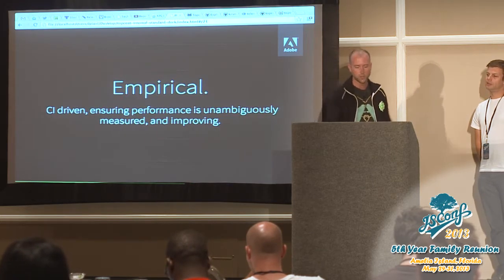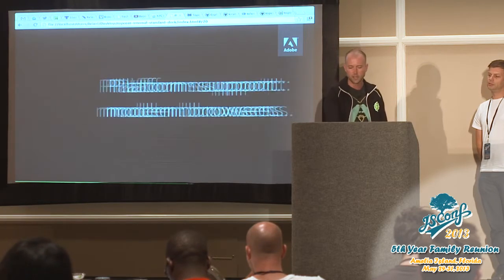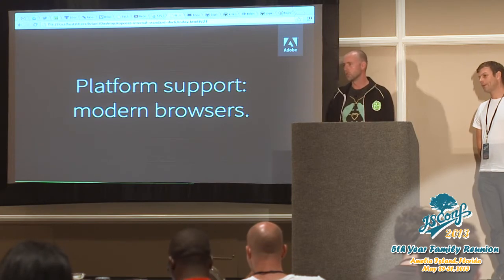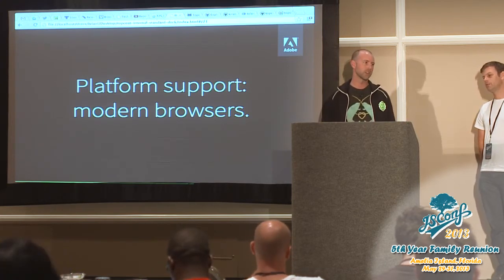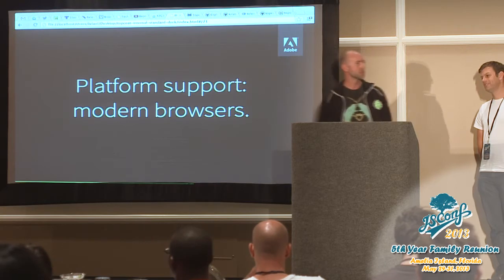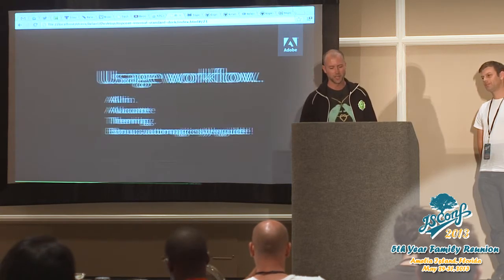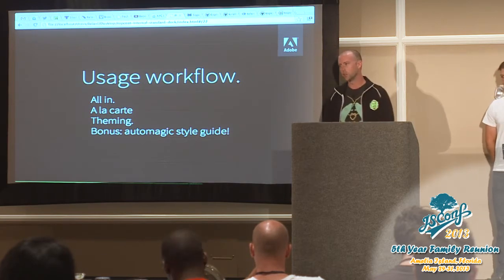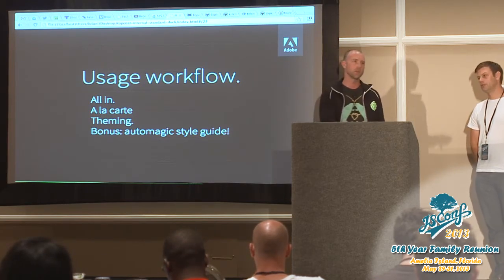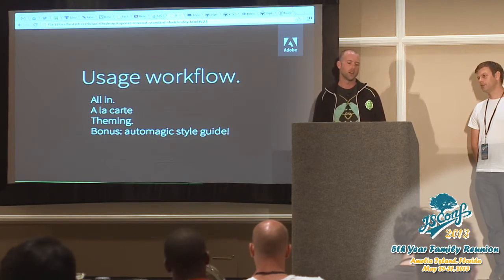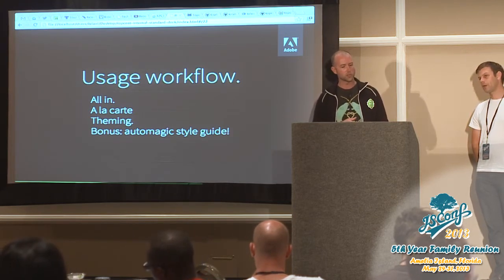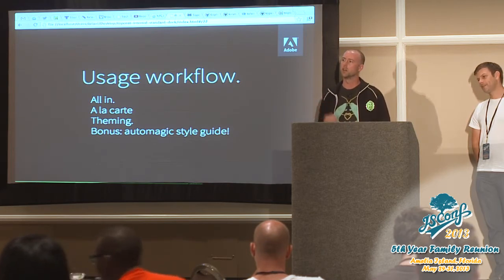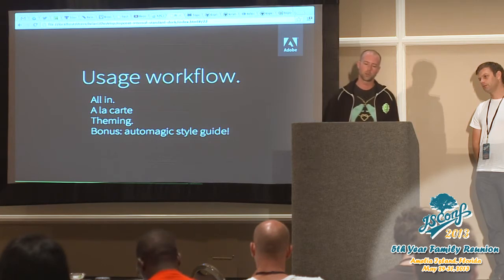Release train, empirical CI-driven. There are three ways to use TopCoat: you can use it the same way you use Bootstrap today by including everything — though I don't recommend that for production. There's an à la carte way of building it, which we'll show you. It uses a package.json. You can choose which controls you want, which aesthetic you want, and which platforms you want to support. As a bonus, you get a style guide as you're building it.